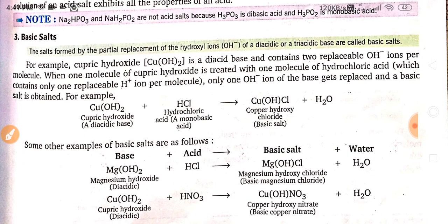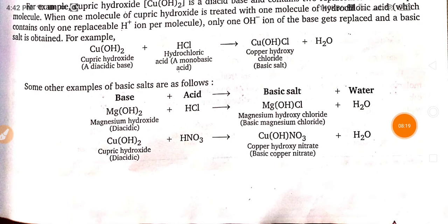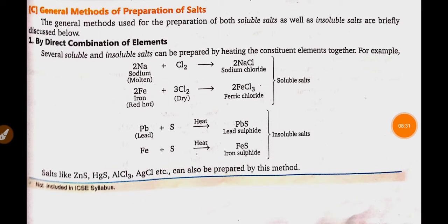Basic salts are salts formed by the partial replacement of the hydroxyl ion of a diacidic or triacidic base. In basic salts, the hydroxyl ion will be replaced. For example, cupric hydroxide, a diacidic base, reacts with the monobasic acid hydrochloric acid and forms copper hydroxy chloride — it is a basic salt. Other examples are also given in which the OH⁻ ion is replaced.